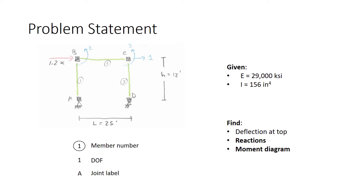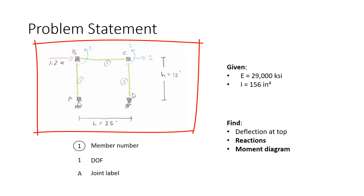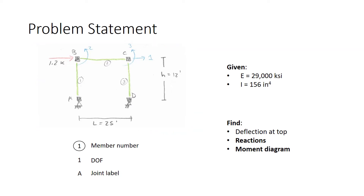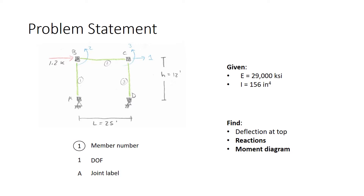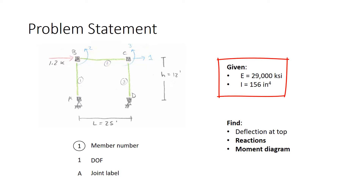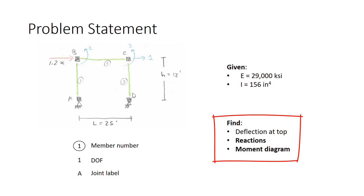Let's remind ourselves of the problem statement. We have a one-story, one-bay portal frame with a lateral load of 1.2 kips at the top. The joints and members are labeled as shown, and our degrees of freedom shown in blue are a lateral deflection at the top and rotations of joints B and C. We're given certain material and cross-sectional properties, and our task is to find the deflection at the top, reactions, and the moment diagram.